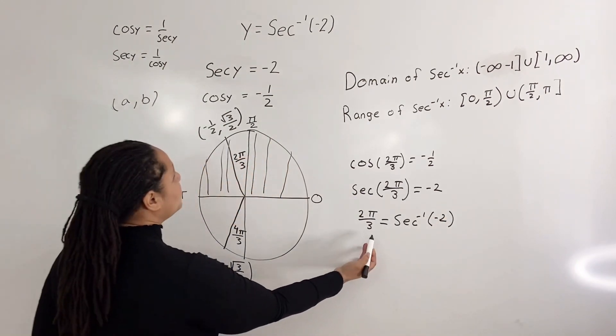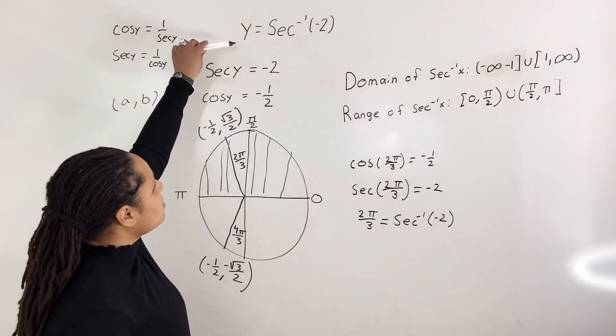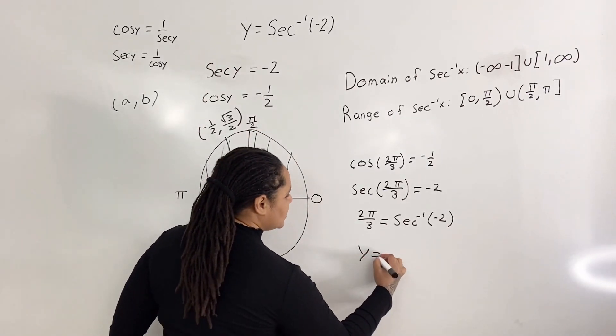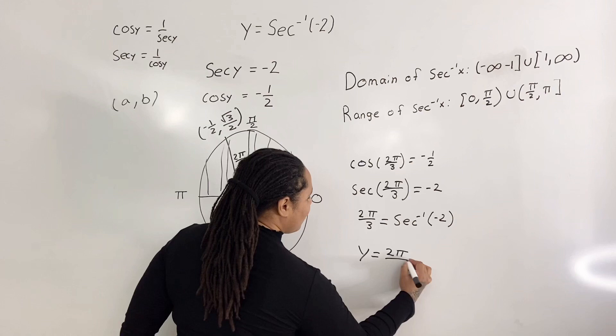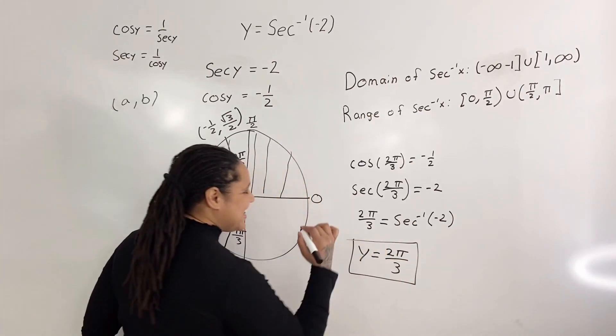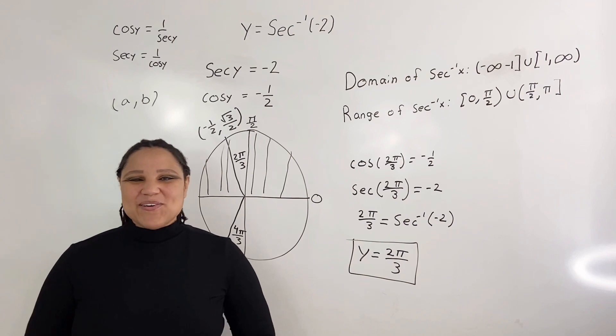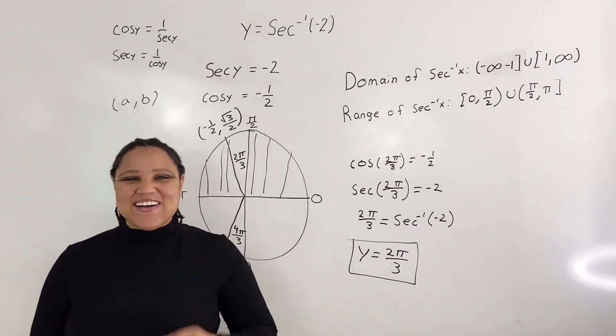And sure enough, that's what we want to find. We want to find what is our value for y. So we can say that our y equals 2π over 3. And that is how you find the exact value of inverse secant. Thank you for watching, and always remember that you are awesome.